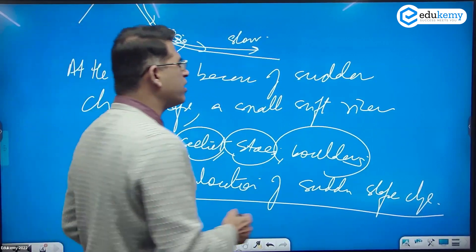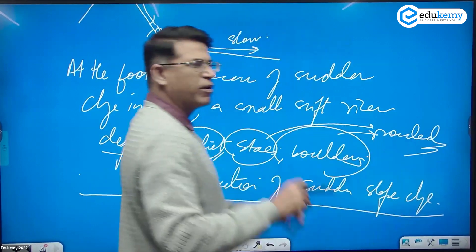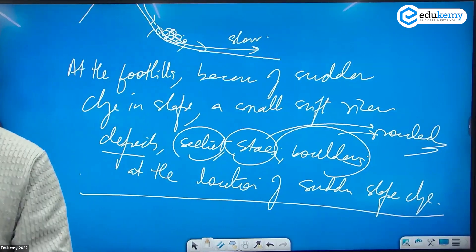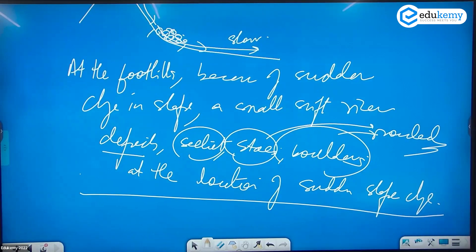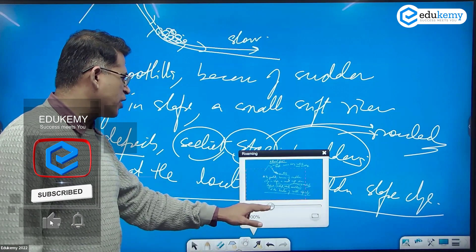Most of the stones and boulders will be rounded because they are rolling down. They become rounded over time, and they deposit at the location of sudden slope change.